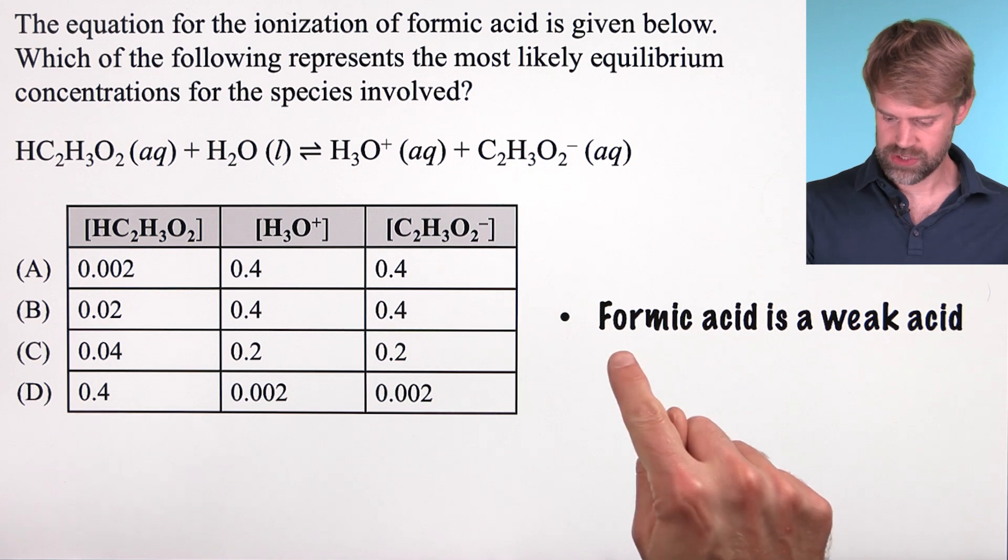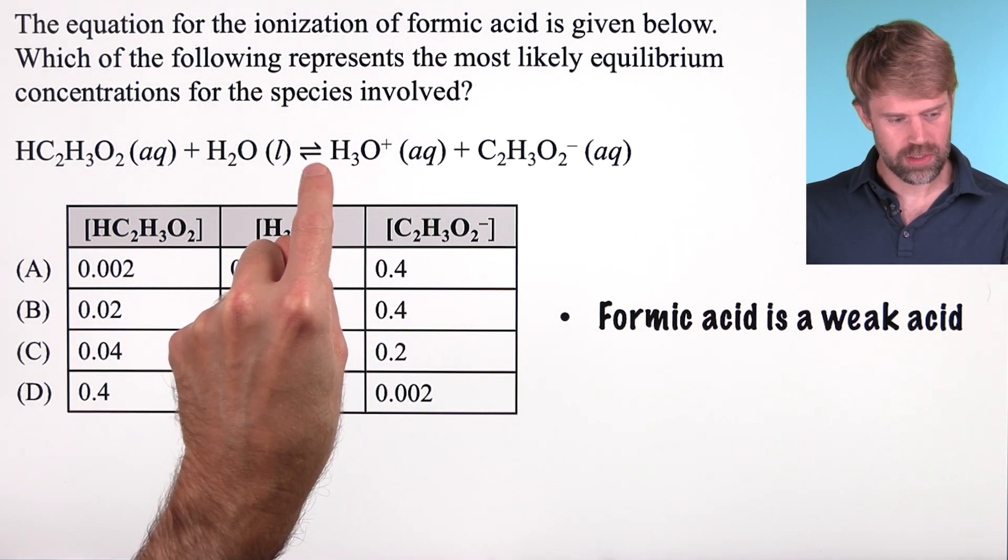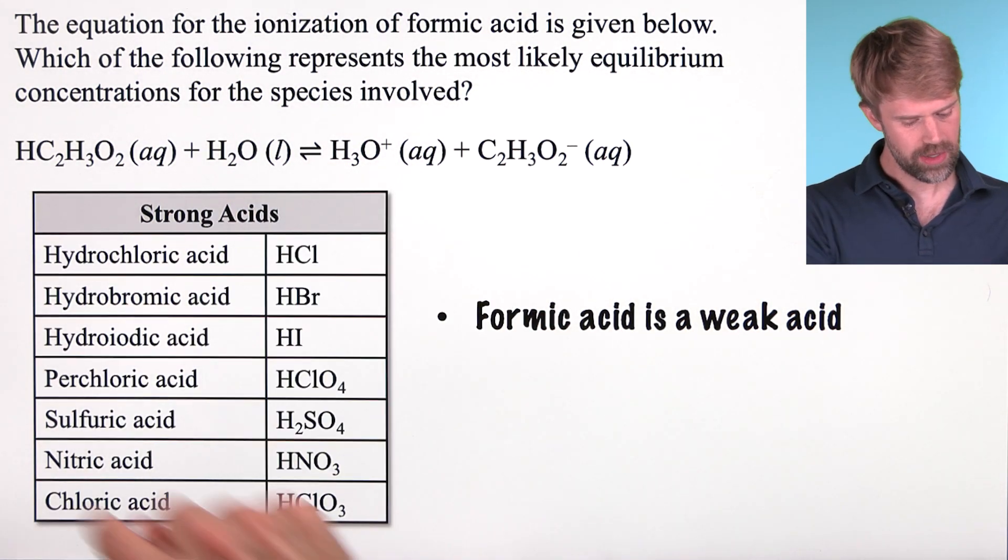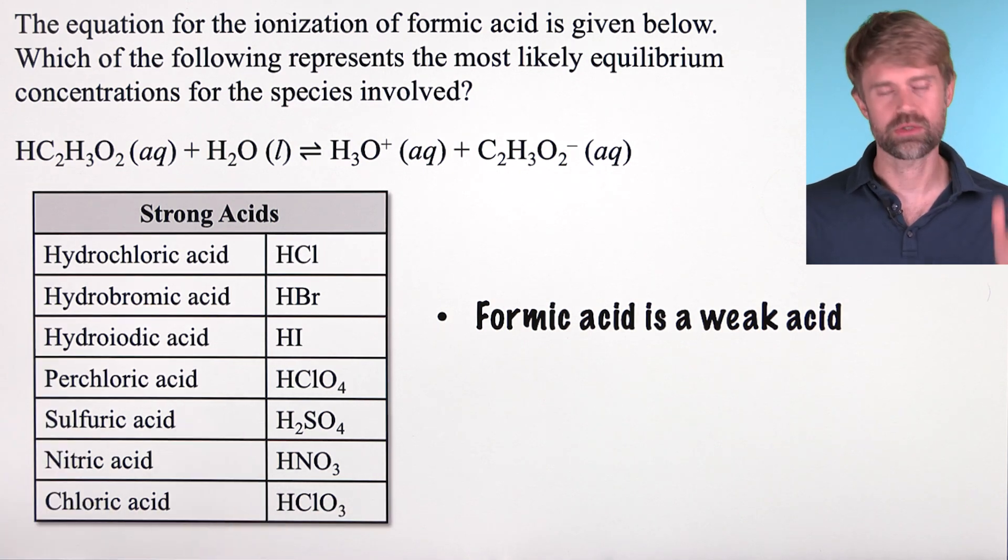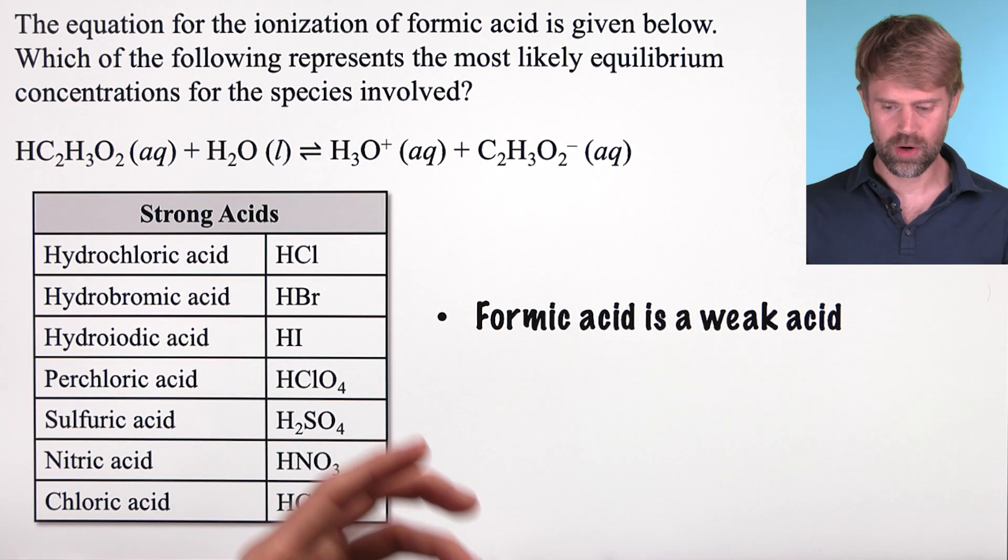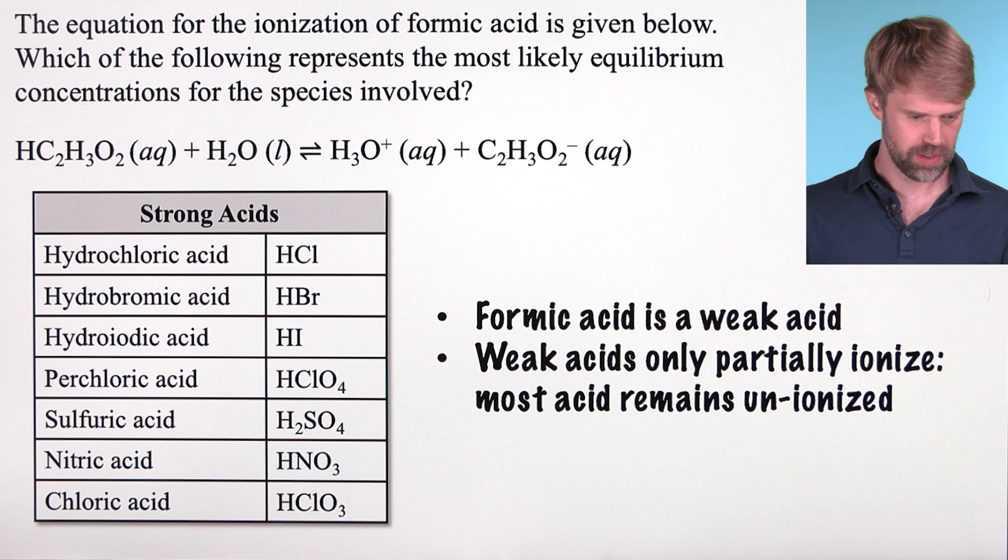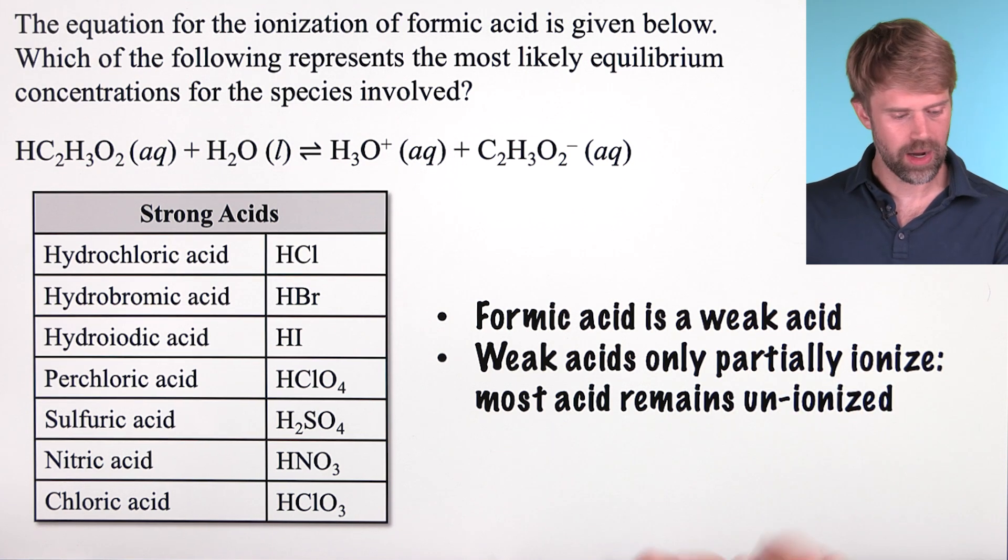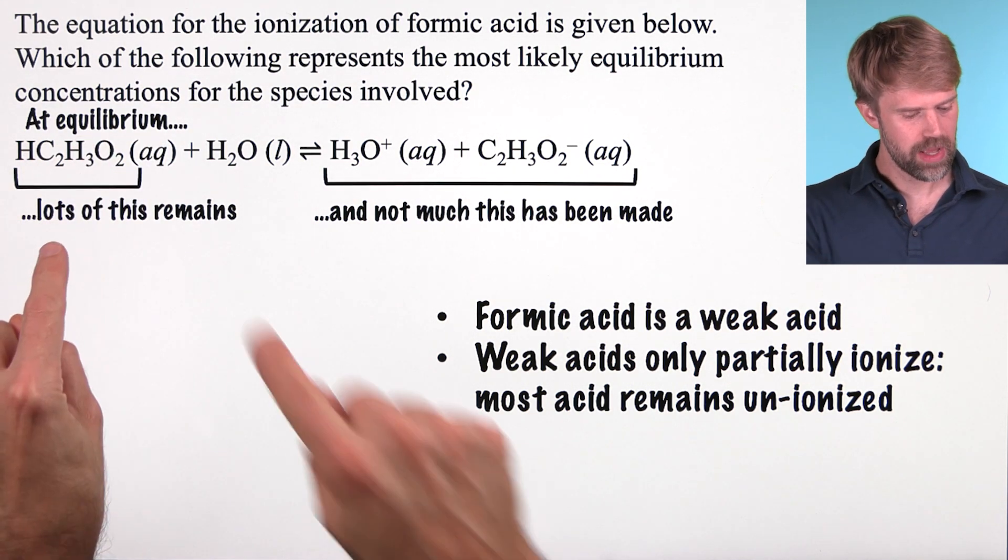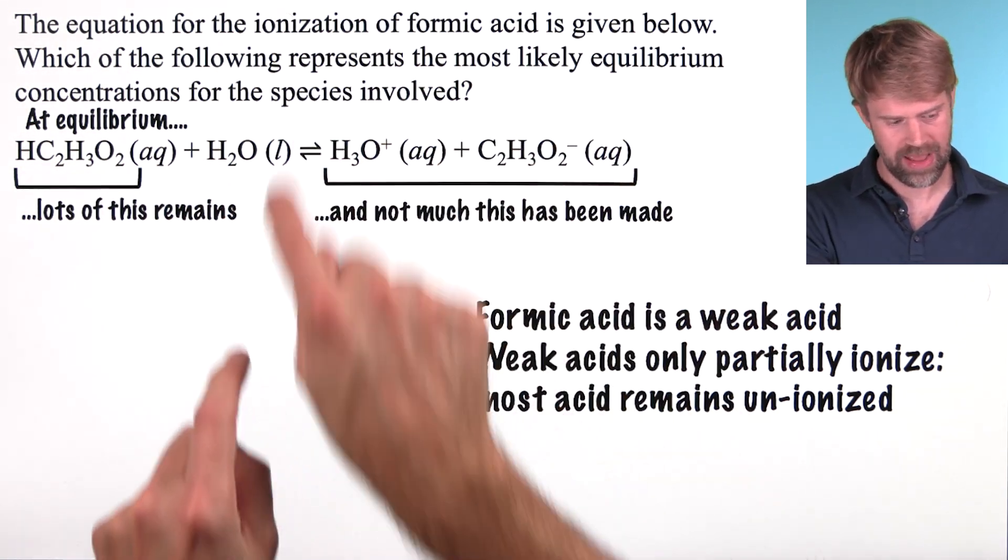Let's start at the beginning. First off, formic acid is a weak acid. We can see that it's an equilibrium here, which is a good clue that it's a weak acid. But also, it's not on our list of strong acids. As we said before, sometimes you do have to memorize stuff and this list of strong acids is a really good thing to have memorized. But again, you want to make sure that when you're memorizing things, you understand when to use them, how to use them, how they will be helpful. So it's important that formic acid is a weak acid because weak acids only partially ionize. Most of the acid remains unionized. In other words, at equilibrium, lots of this acid remains and not much of these, the hydronium and the formate ion, have been made.